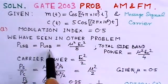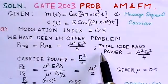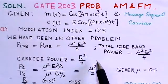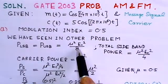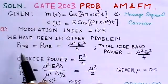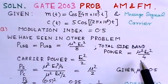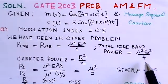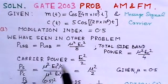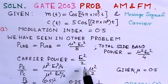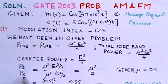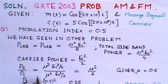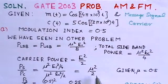This is the power in each sideband. To get the total sideband power, we sum the lower and upper sideband powers, giving μ²Ec²/4. The carrier power is Ec²/2. So the ratio of sideband power to carrier power, Ps/Pc, equals (μ²Ec²/4) / (Ec²/2), which simplifies to μ²/2.